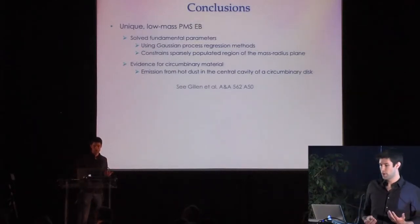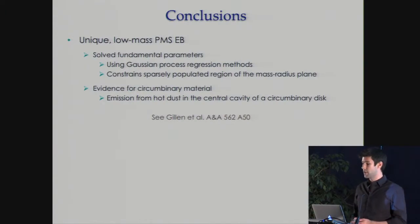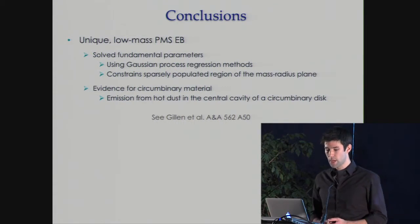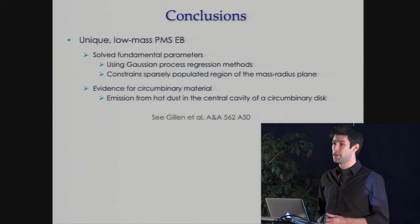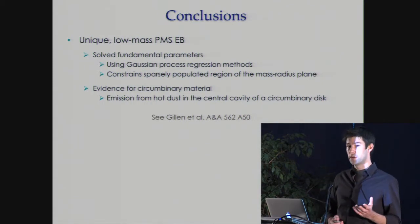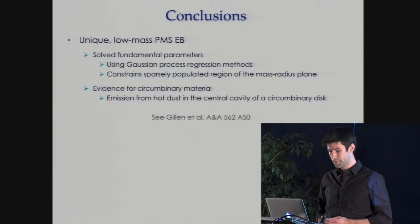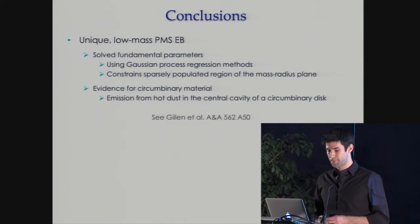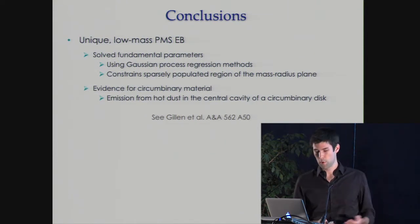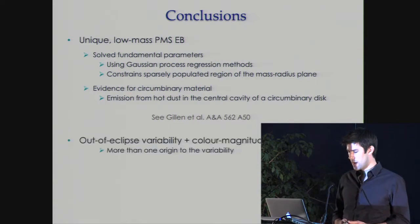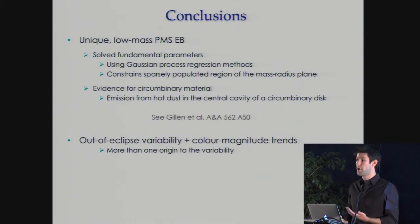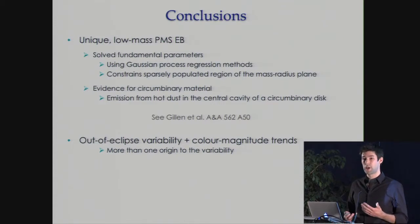To conclude: we have a unique low-mass pre-main sequence eclipsing binary whose fundamental parameters we've solved using Gaussian process regression, allowing us to constrain a sparsely populated region of the mass-radius diagram. The system also has evidence for a circumbinary disk, inferred from indirect measurements of dust emission within the central cavity, and this is written up in a paper published earlier this year. The out-of-eclipse variability is difficult to explain with just one form of variability — it looks like we need more than one kind, but exactly what remains difficult to constrain with current data.